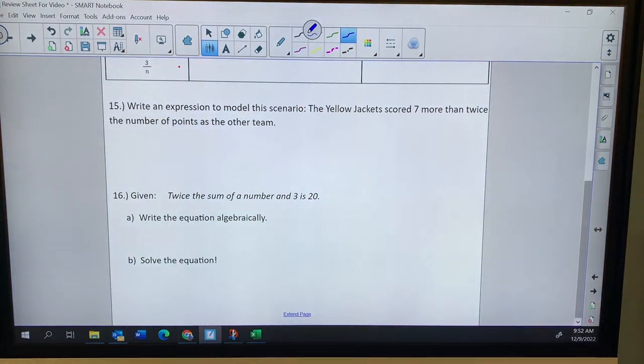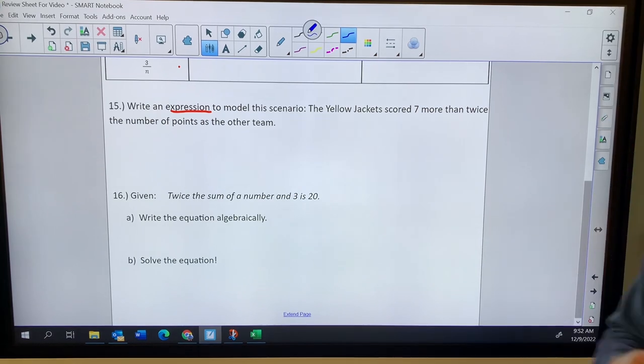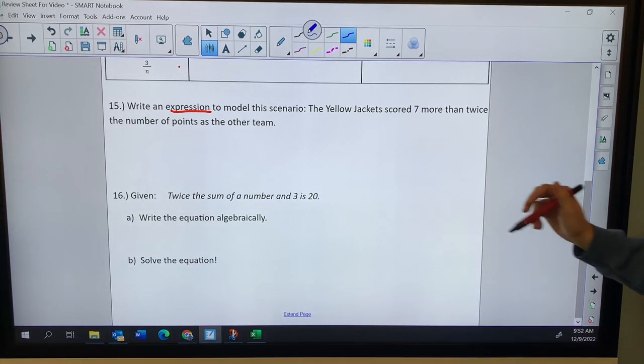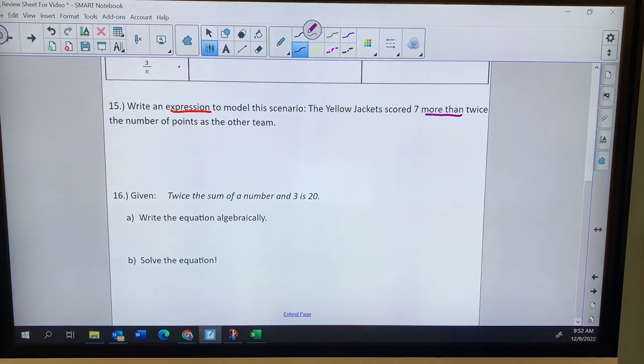15. Write an expression to model this scenario. They're giving us a hint here with the expression. It means I don't need an equal sign. The yellow jacket scored seven more than. More than. That's telling me addition.